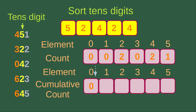We can see that the number of counts for each of the elements is simply shown here. For number 2, I have two 2s. For number 3, I have no 3s. Same for no 0s and no 1s. For number 4, I have two 4s. Also, I have one 5. Then I can find out the cumulative count using much the same approach as for the unit digits.